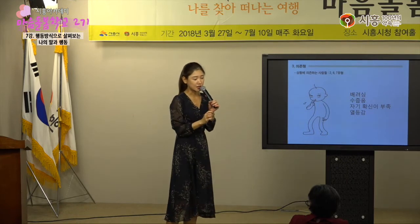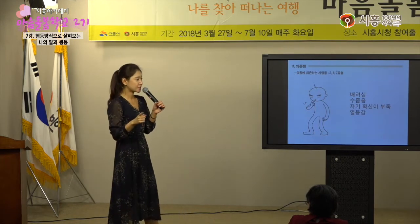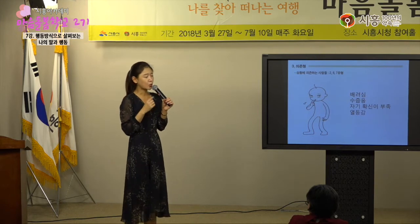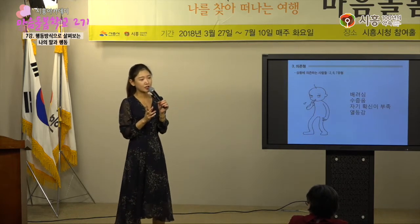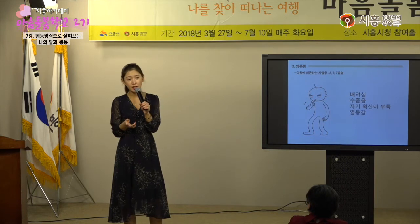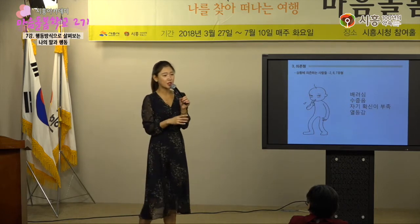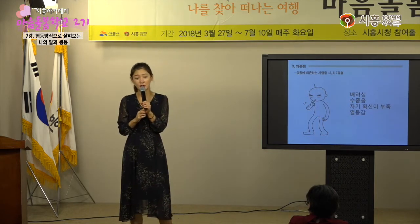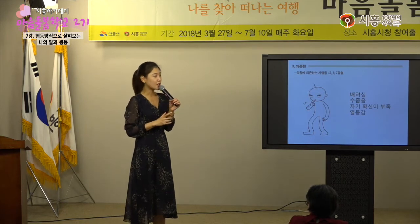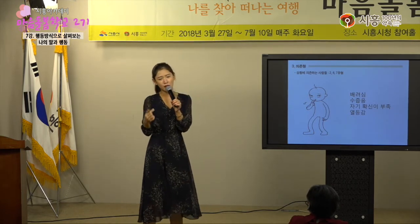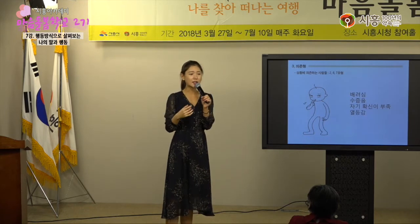의존형의 타고난 기질은 주변 상황을 굉장히 빨리 인식을 한대요. 공격이나 움츠림은 주변 상황을 내가 보려고 해야 보이는 거지만 의존형들은 그런 게 그냥 눈에 싹 알아차려지는 거예요. 사람들의 반응, 표정, 어떤 분위기. 제 동생이 의존형인데, 제가 공격형이라 직선적으로 말할 때 동생이 항상 그때마다 주변 사람들의 표정을 살펴요. 그러고 나서 모임이 끝나면 언니 아까 그 얘기했을 때 사람들 표정 봤어? 언니 그렇게 얘기하면 안 되지, 사람들이 기분 나빠하잖아 라고 하죠.